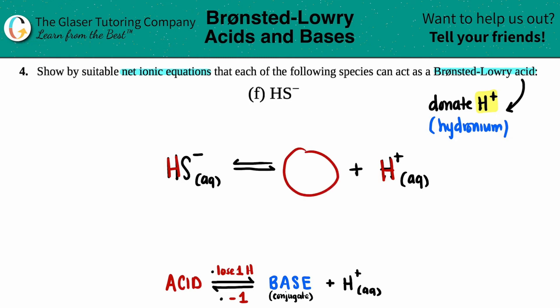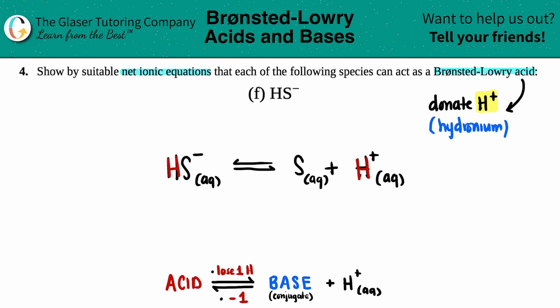Now for the conjugate base, all you have to write is what's left. I only have an S here, so that's all I can write. That's the conjugate base — conjugate just means that it's on the product side. The only thing left is to add a negative one charge. HS⁻ had a negative one charge, and since I lost that hydrogen, I subtract one more: negative one minus one is negative two. So the conjugate base is S²⁻.